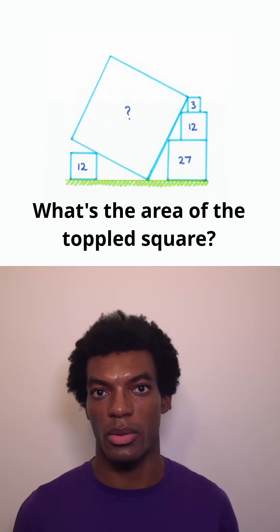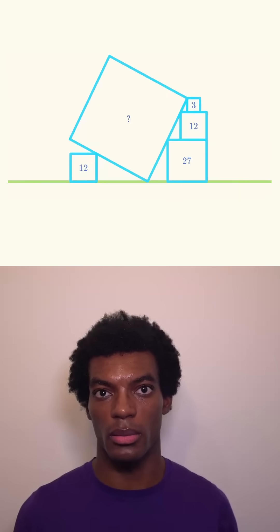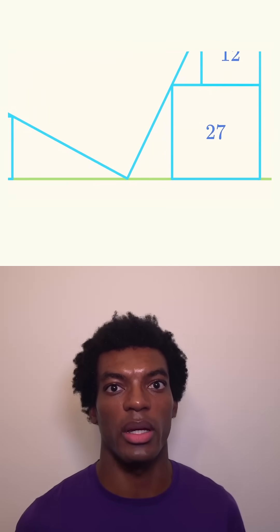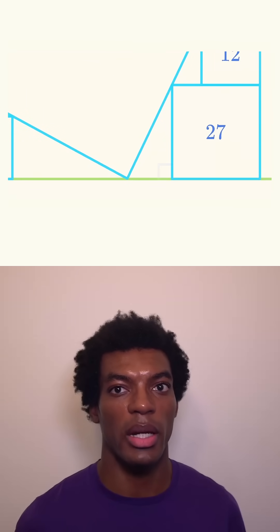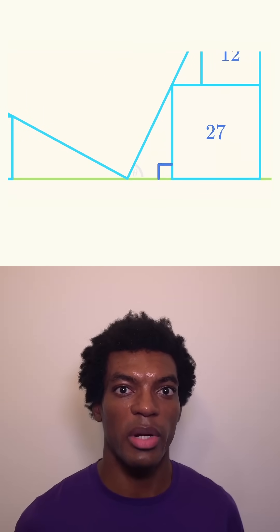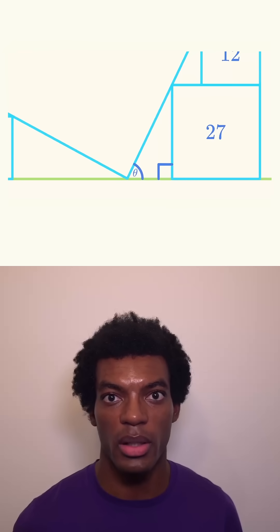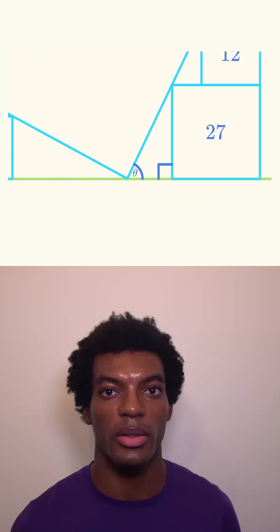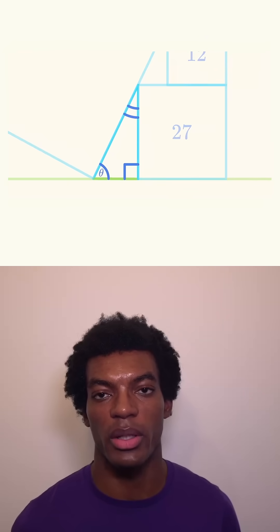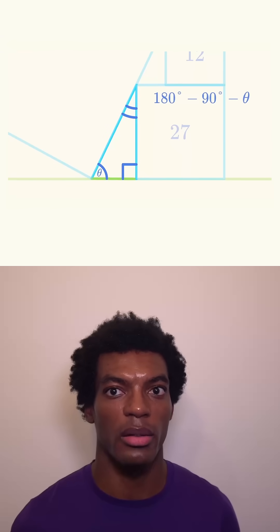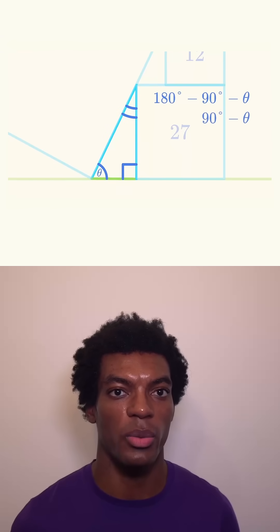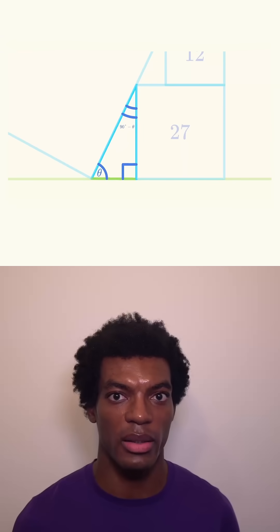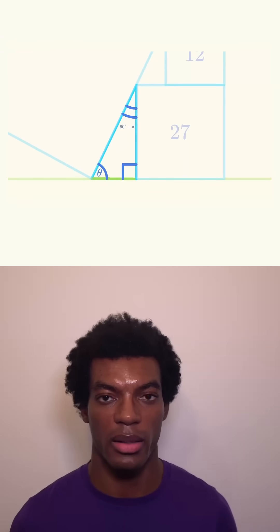What's the area of the toppled square? Let's look at the bottom triangle. There's a 90-degree angle on the bottom right, and we'll call this angle theta on the bottom left. Since all angles in a triangle add up to 180, the remaining angle is 180 minus 90 minus theta, which simplifies to 90 minus theta.